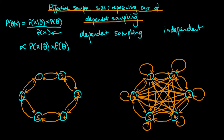The dependent sampler is a kind of way of doing local stepping around posterior space. The way in which we should do that local stepping should depend on the value of our unnormalised posterior at our current location compared to that at the location we propose to step to.